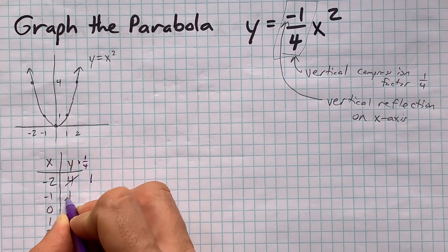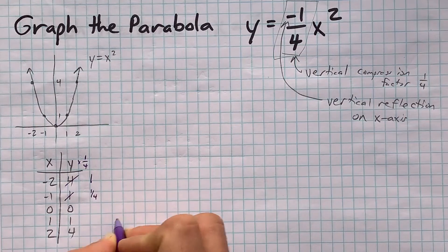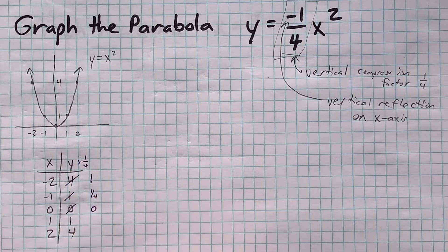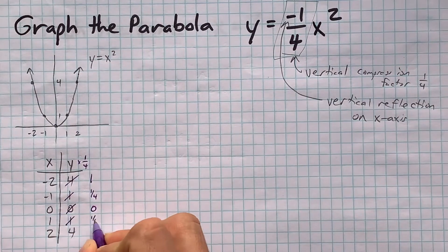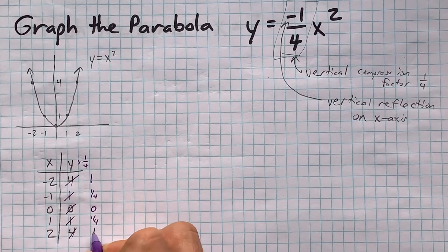A quarter of 0 is still 0. A quarter of 1 is still a quarter, and a quarter of 4 is 1.